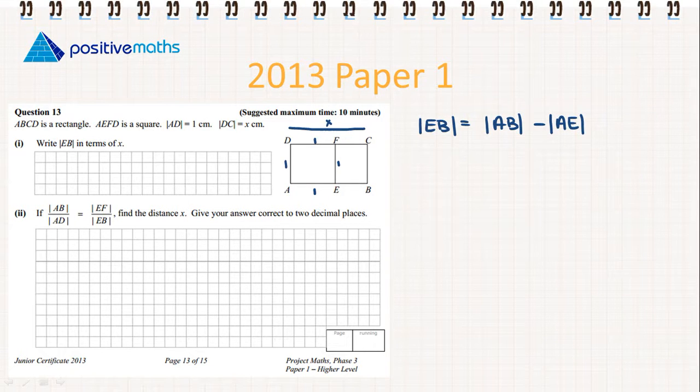So we'll fill in what we know. AB is equal to x and AE is equal to 1. So EB is equal to x minus 1.